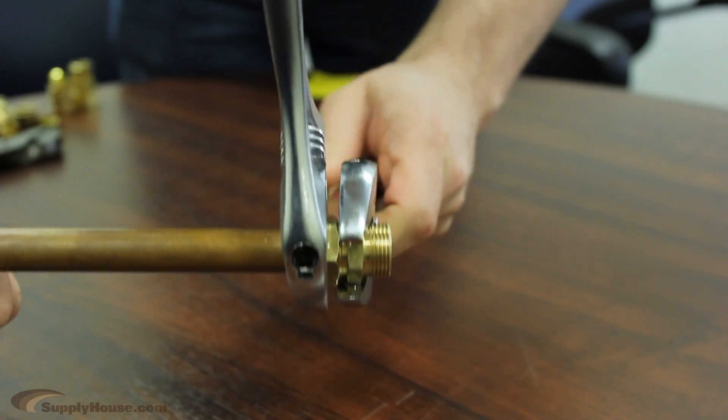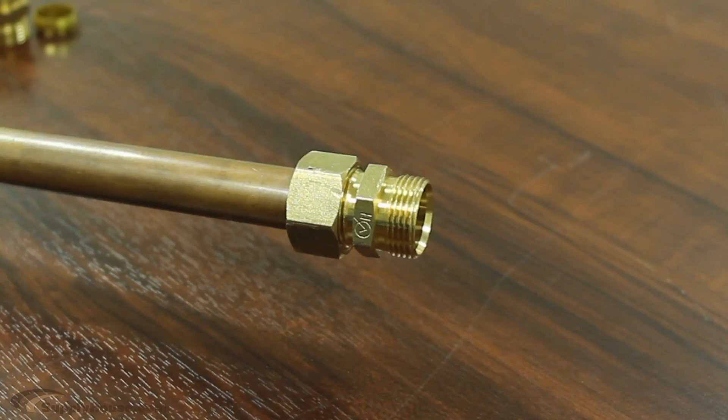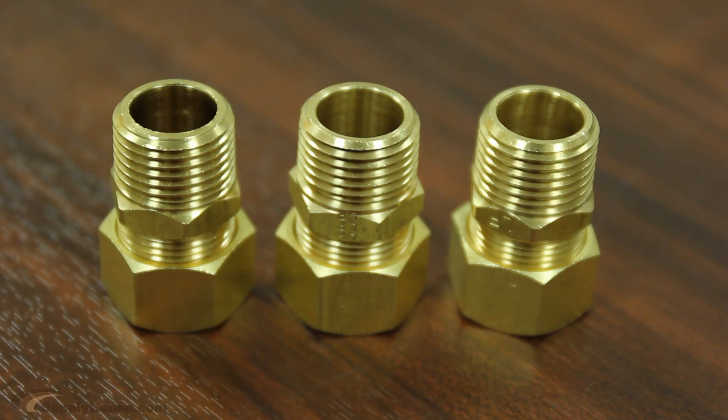Compression fittings are commonly used under faucets or fixtures to provide a watertight seal. They are ideal in applications that require occasional removal or disassembly for maintenance.